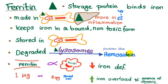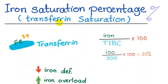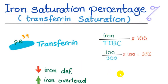Ferritin level will also be elevated in anemia of chronic disease, but keep in mind it can be elevated secondarily due to inflammation via interleukin-6, which can give false interpretation. Transferrin saturation is a calculated value — iron level divided by TIBC multiplied by 100. This will be reduced in iron deficiency because iron levels are reduced. In iron overload, the iron level increases so percentage saturation will be high. If iron level in blood (serum) is elevated, it is usually in favor of iron overload.